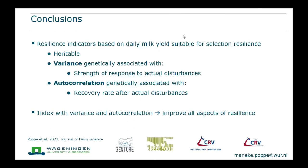In conclusion, based on this study I would say that the resilience indicators based on daily milk yield are suitable for selecting for better resilience: first because they are heritable, and second because variance is genetically associated with strength of response to actual disturbances while autocorrelation is associated with recovery rate after actual disturbances. If we put those two together in a resilience index, we should be able to improve all aspects of resilience simultaneously. I'd like to thank the sponsors Gentler and Breed for Foods, and CRV for providing the data.